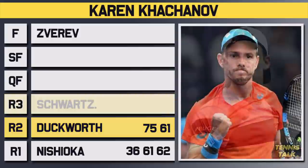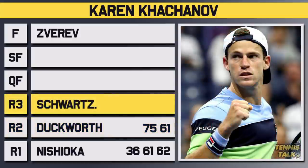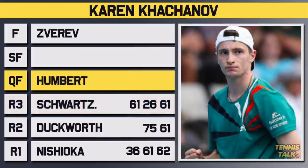His third round opponent would be the number eight seed Diego Schwarzman. After losing the second set, Hashinov destroyed Schwarzman in the third, prevailing in three sets, 6-1, 2-6, 6-1. In the quarterfinals, he would take on the 14th seed Umber, and after winning a close first set and losing the second, it went down to the wire with Hashinov prevailing 7-6, 6-4, 6-3.